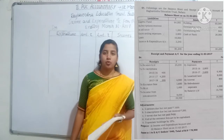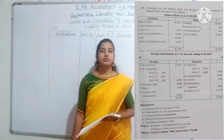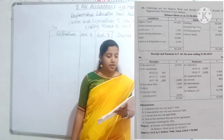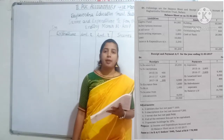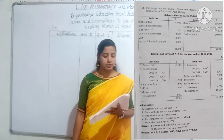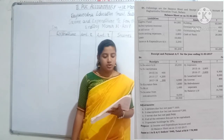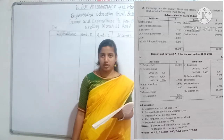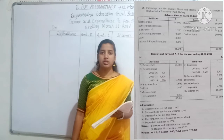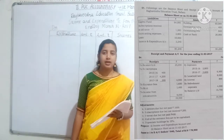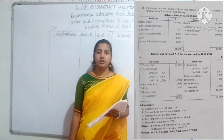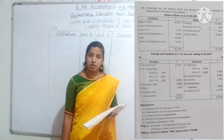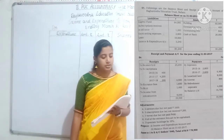In the problem, the balance sheet and receipts and payment account are given along with additional information. On the liability side, the first entry is capital fund. Subscription received in advance is relating to the present year, so it should be added to the subscription amount. It is a liability side entry for the subscription amount received in advance.